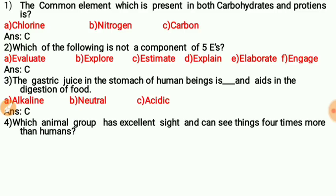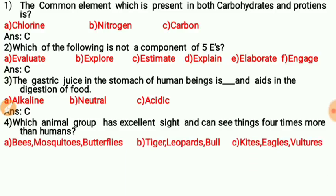Question four: Which animal group has excellent sight and can see things four times more than humans? The correct answer is C — kites, eagles, and vultures.